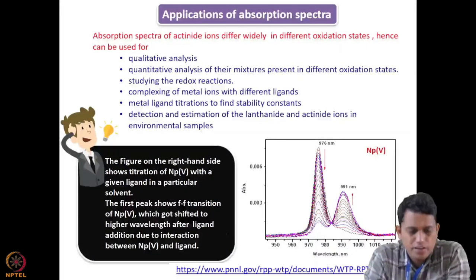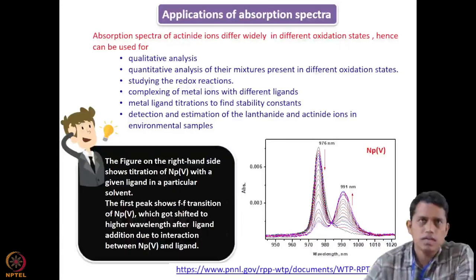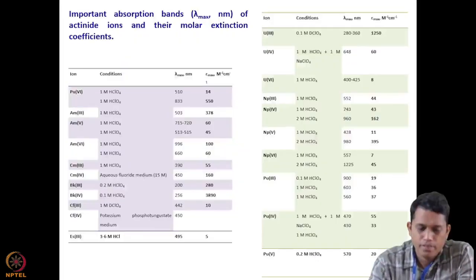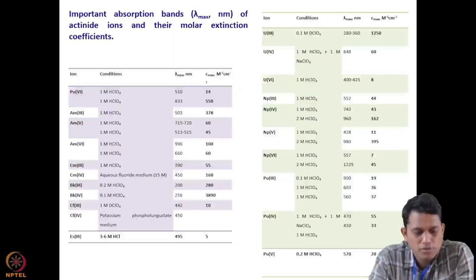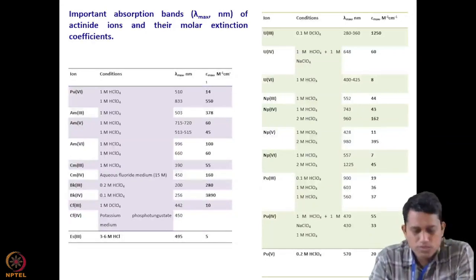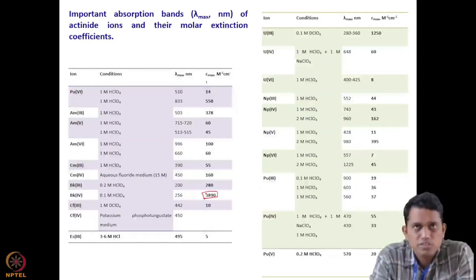Hello everyone and welcome back to the series of lectures on Actinide Chemistry. In the last lecture we left off on absorption studies of lanthanides and actinides. In this table I have given you the lambda max as well as the epsilon max, the molar absorptivity, of different actinides in one molar perchloric acid. You can see that many of the actinides have a very high epsilon max, suggesting you can measure even very small quantities using UV spectroscopy.